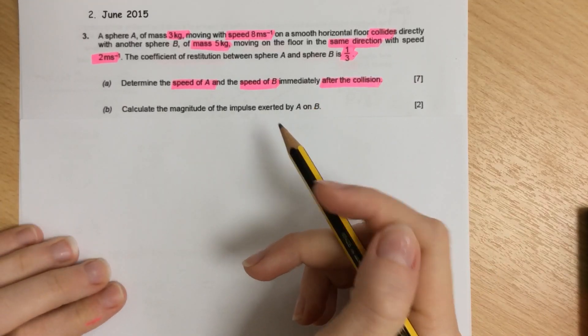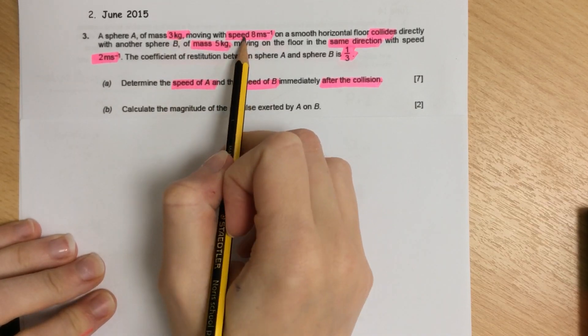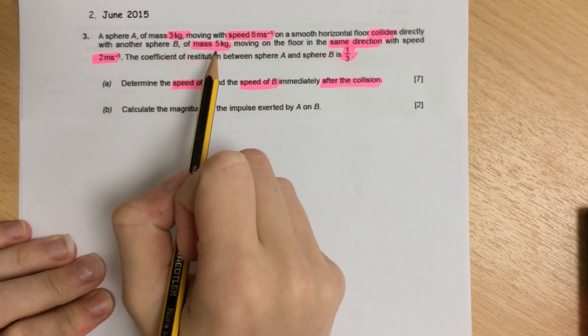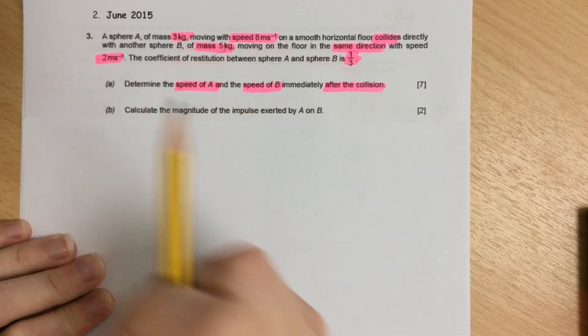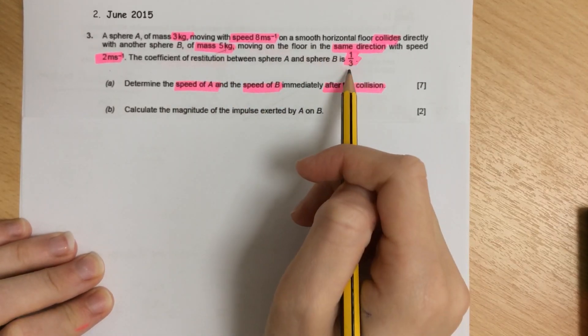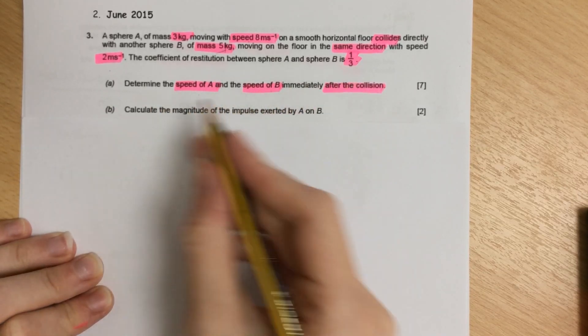This is a June 2015 question on momentum. A sphere of mass 3 kilograms moves at a speed of 8 and collides with another sphere of mass 5 kilograms moving in the same direction at a speed of 2. The coefficient of restitution is one-third. Find the speed of A and the speed of B after the collision.